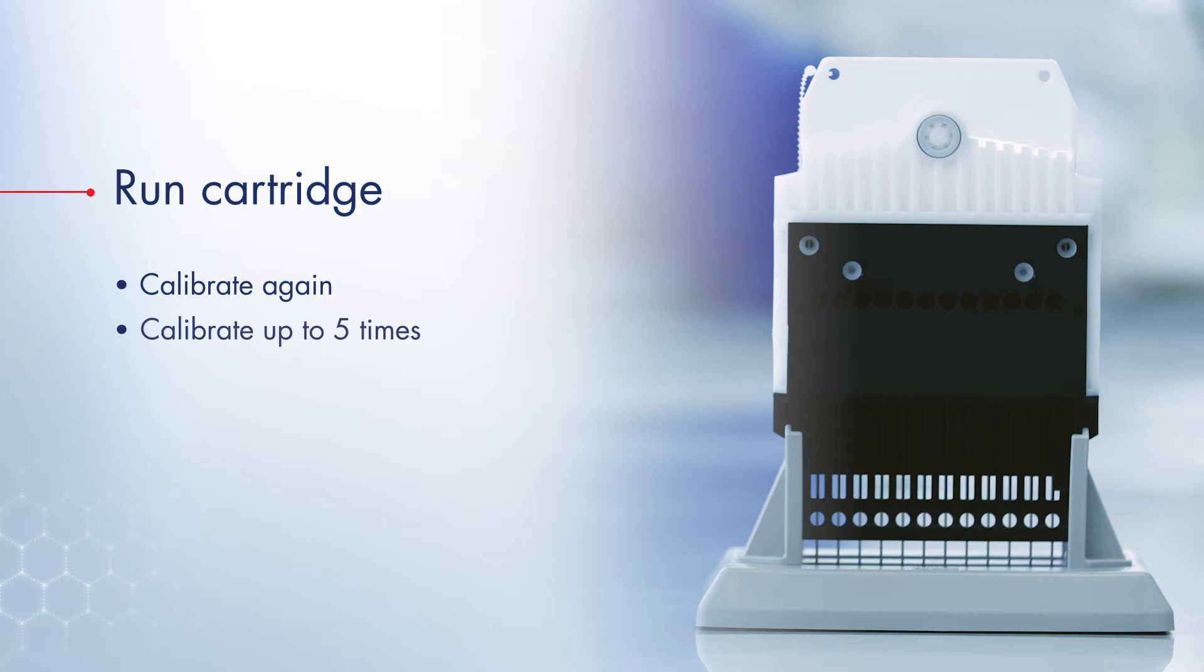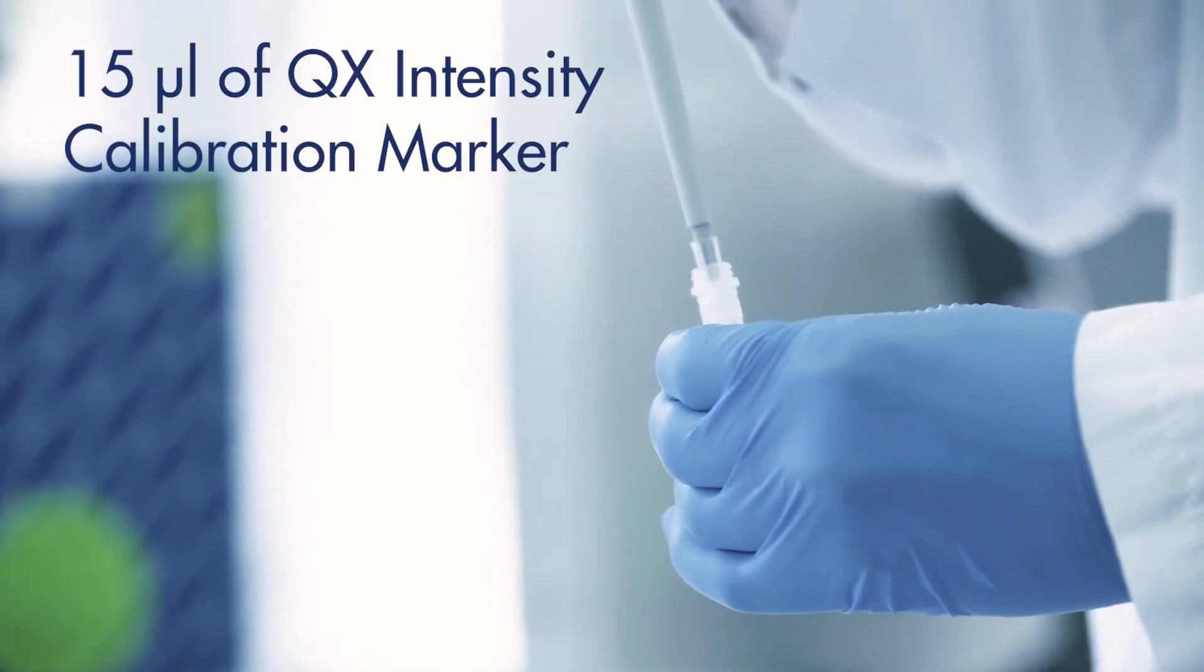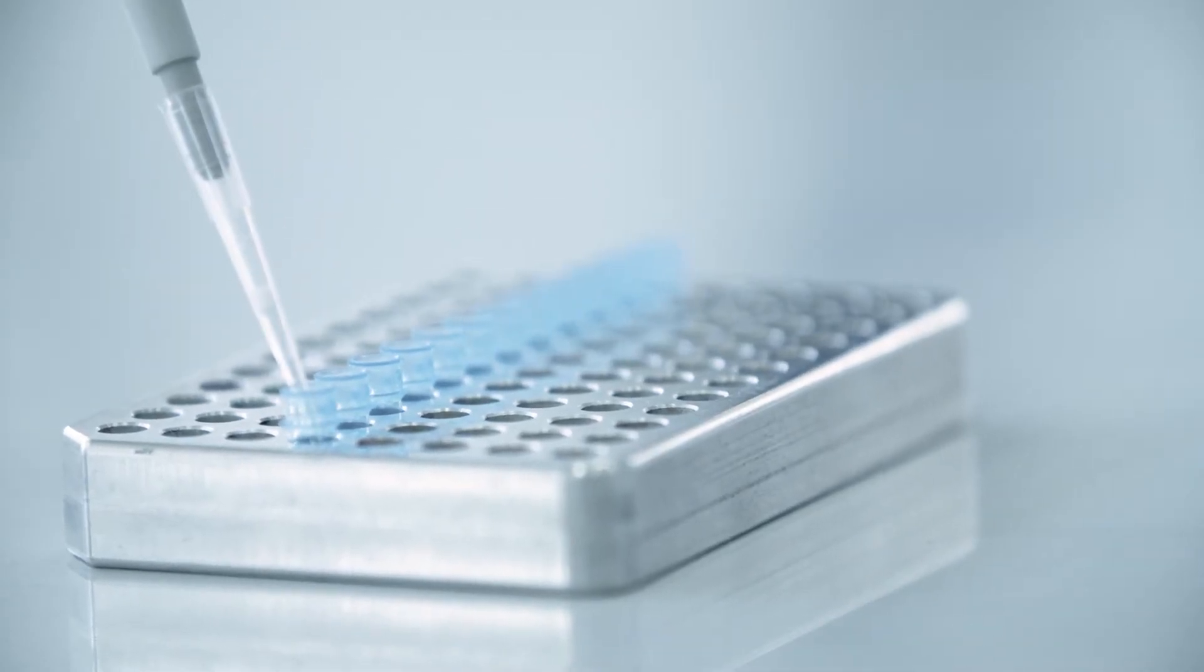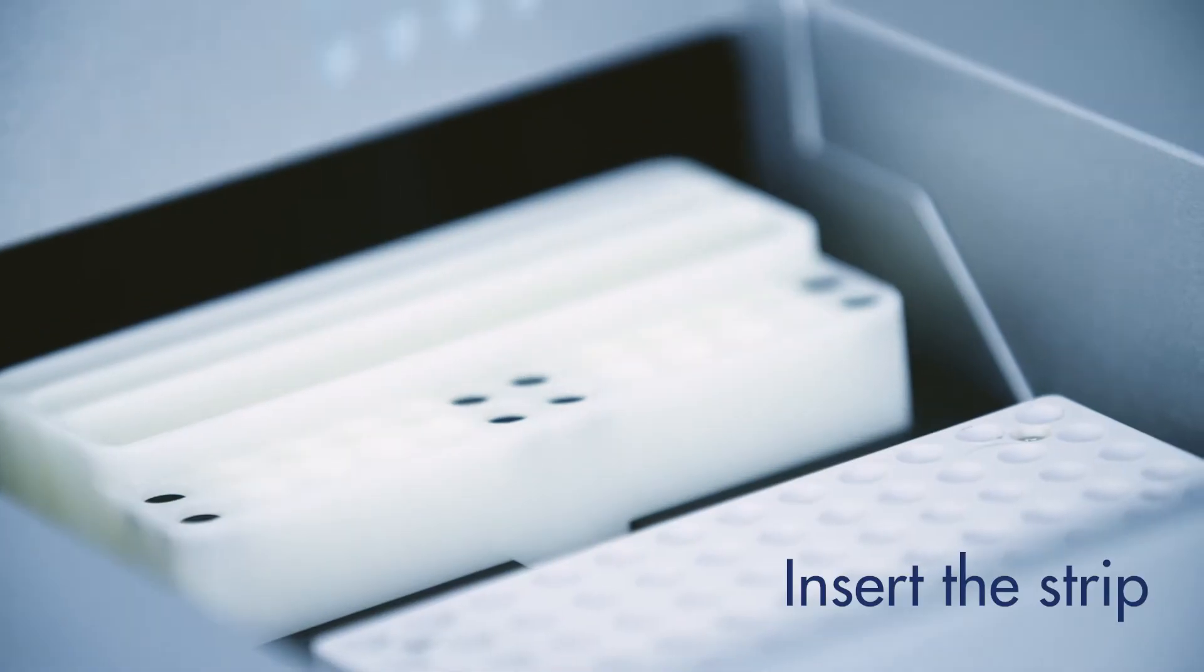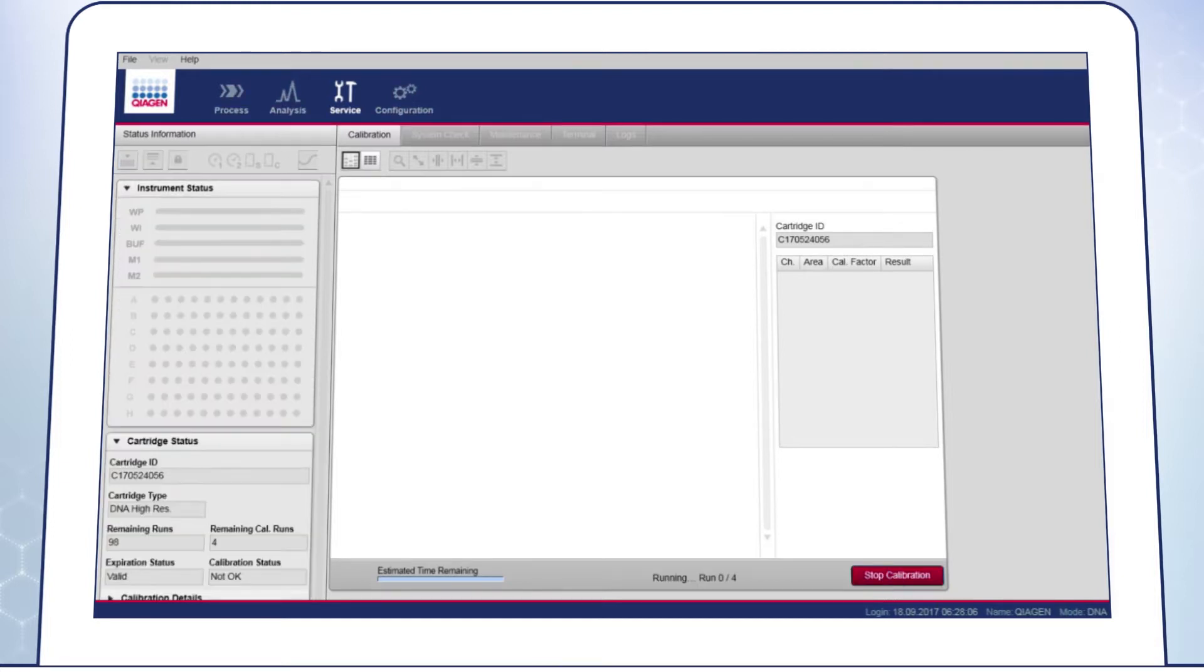A cartridge can be calibrated up to five times. Load 15 µl of QX Intensity Calibration Marker into a 0.2 ml 12-tube strip. Add a drop of mineral oil and insert the strip into the Marker 2 position of the buffer tray. To launch the calibration run, go to the service environment of the Kaixcel Screen Gel software. Go to the calibration screen and click on Start Calibration.